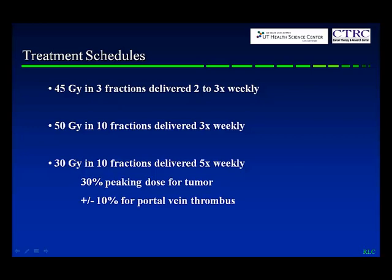Treatment schedules we've been using: 45 Gy in three fractions, typically delivered twice a week. If a patient comes from a great distance, we do Monday, Wednesday, Friday to make it more convenient. If we can't reach goals due to nearby sensitive structures, we typically deliver 50 Gy in 10 fractions, also two to three times per week. Typically we're looking for about a 30% peaking dose within the tumor when using SBRT. For treating thrombus with IMRT, 30 Gy in 10 fractions is a true IMRT treatment where we look for plus or minus 10% in the treatment volume.